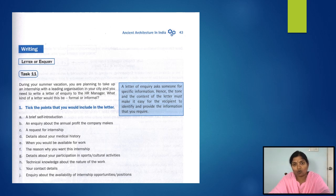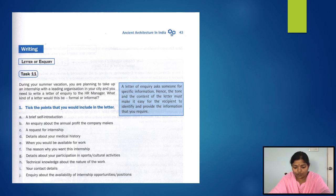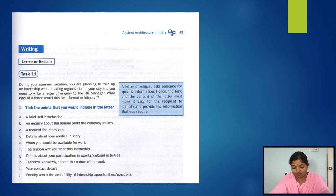D: details about your medical history — no. E: when you would be available for work — no, because you are writing for internship, not to have a job in that organization. F: the reason why you want this internship — very important, so you have to include that. G: details about your participation in sports or cultural activities — no, not required. H: technical knowledge about the nature of the work — yes, this is important to include.